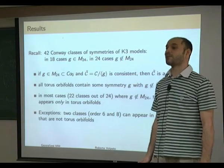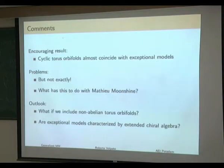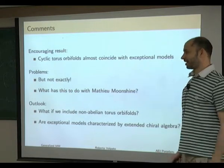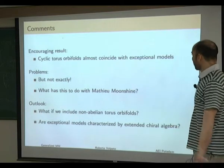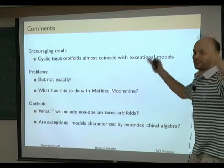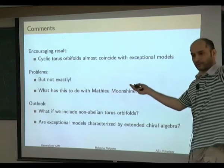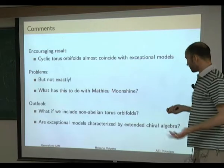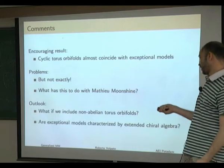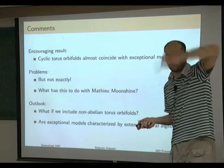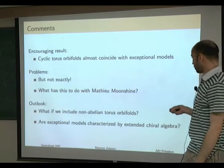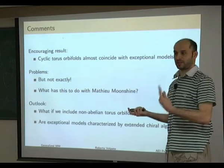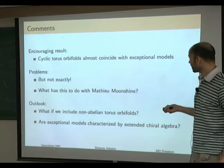Unfortunately there are two exceptions — two classes of order six and eight that appear in some K3 models that are generically not torus orbifolds. This was a somewhat failed characterization. Perhaps one should include non-abelian torus orbifolds, and this might account for all exceptional models. This was difficult to check from the K3 perspective, and easier from the T4 perspective, but has not been done yet.